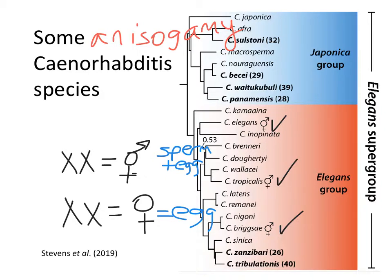There are lots of types of hermaphroditism in nature. There are situations of sequential hermaphroditism, where an organism produces one type of gamete first and then another type second — sperm first then egg, or egg first then sperm. Then there are simultaneous hermaphrodites, where one individual at the same time in the same body produces both types of gametes at once. That's less common than sequential hermaphroditism.